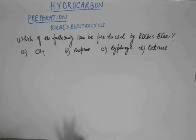Okay, now the next question would be, which of the following can be produced by Kolbe's electrolysis? And the options are methane, propane, biphenyl, and octane.